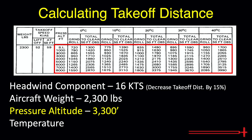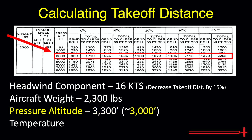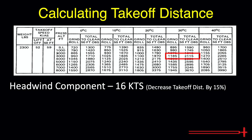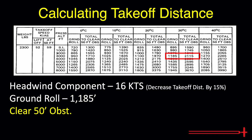I will include a link in the description to a video describing how to find pressure altitude. For this example, we will select data from 3,000 feet, as that is the nearest value to 3,300. Our temperature for this example, based on today's METAR at Imagination Land, is 29 degrees Celsius, which will round up to 30 degrees. Once we've done this, we are left with our expected ground roll of 1,185 feet and our distance to clear a 50-foot obstacle at 2,115 feet.